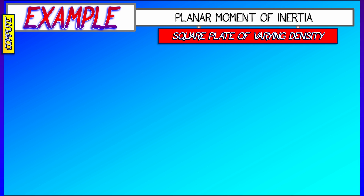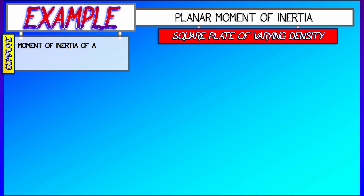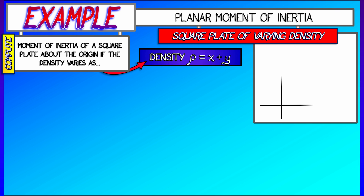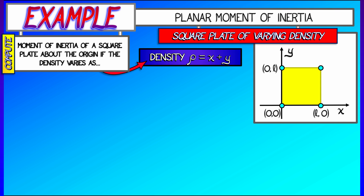Let's say that we take a square plate in the plane of varying density, with rho equals x plus y, and it's got one corner at the origin and the other corner in the upper right at the point (l, l). It is rotating about the origin, so you need to imagine the axis coming out of the origin towards you.